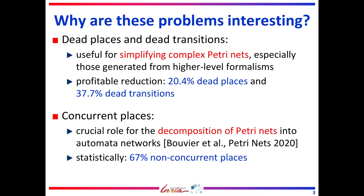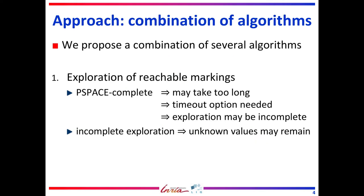Such a reduction is profitable in practice. Statistically, we measured on thousands of PetriNets that 20% of places are dead and 37% of transitions are dead. The concurrent places problem plays a crucial role for the decomposition of PetriNets into automata networks, because when two places are concurrent, they must be located in two distinct automata. We observe that among all pairs of places, 67% are non-concurrent.